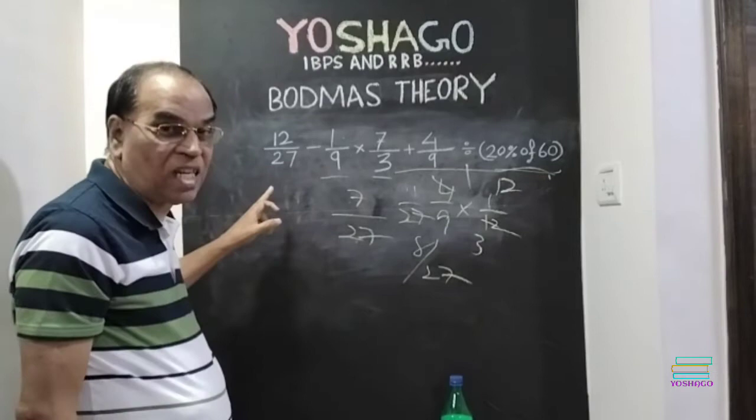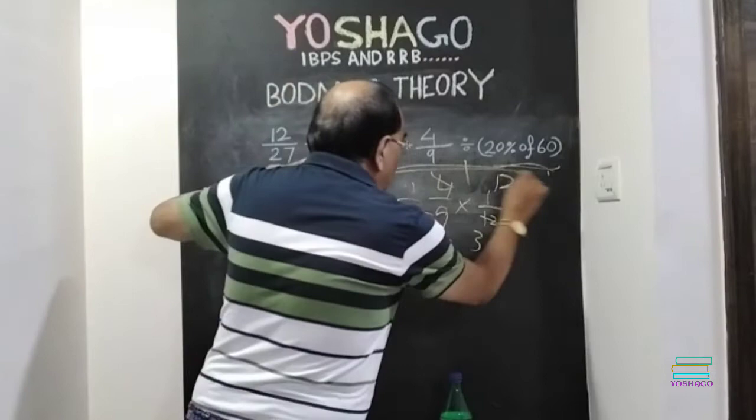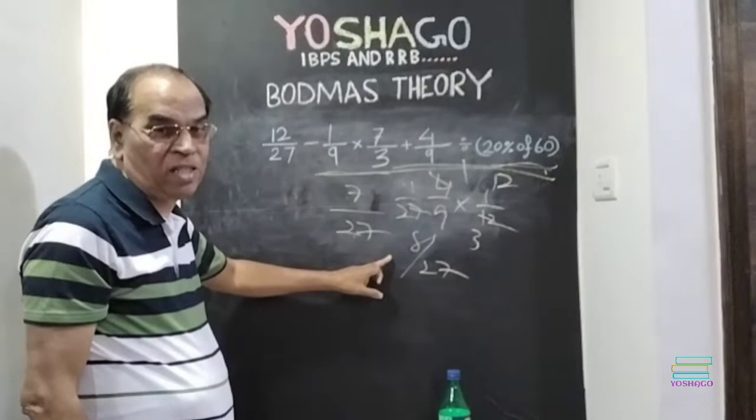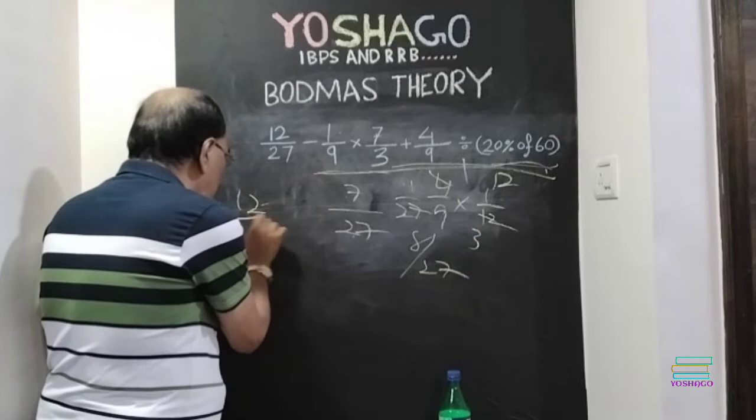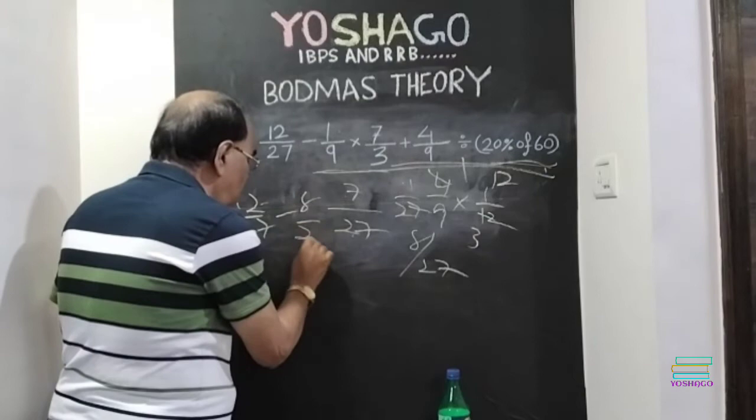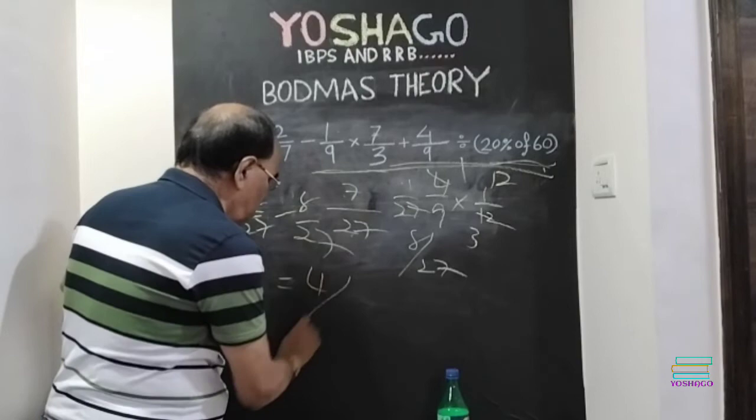Just understand how I have done. Now, last subtraction. 12 by 27 minus whatever we have got here. 12 by 27 minus 8 by 27. Is equal to? 12 by 27 minus 8 by 27. The answer we get is 4 by 27.